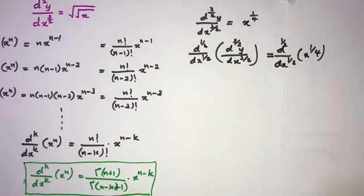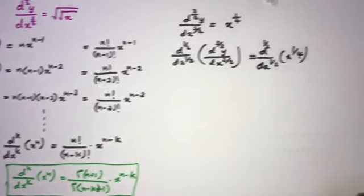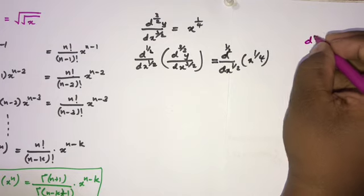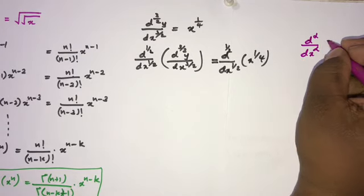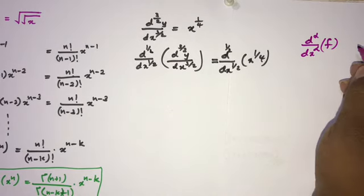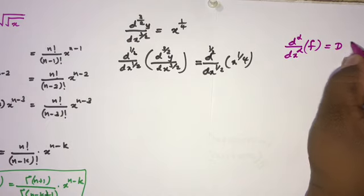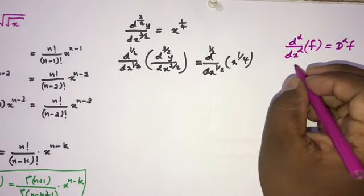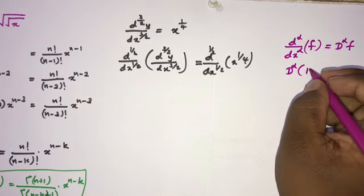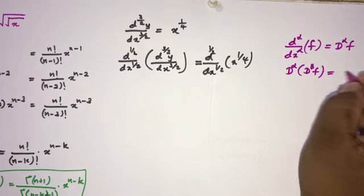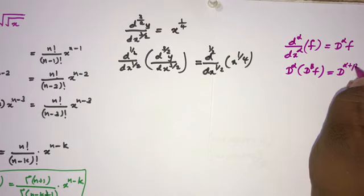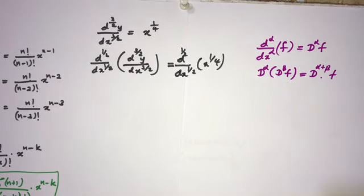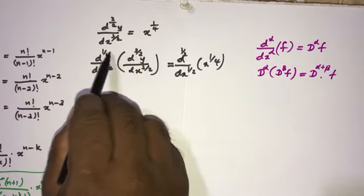We use the property of fractional order derivatives: if we take the α-derivative of the β-derivative of f, denoted D^α(D^β f), this equals D^(α+β) f. So applying D^(1/2) to D^(3/2) gives D^2, i.e., the ordinary second derivative.